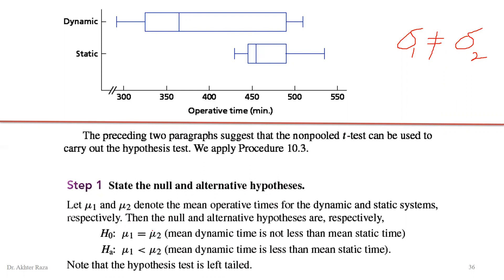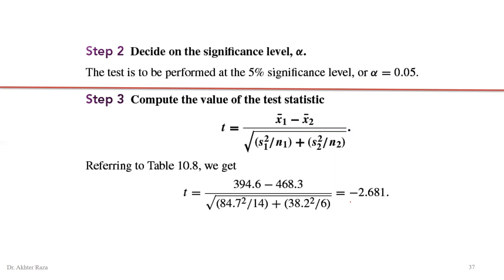The null hypothesis states mean 1 and mean 2 are equal — that the average operative time in the dynamic system is the same as in the static system. The alternate hypothesis, the researcher's claim, is that the average operating time in the dynamic system is smaller than in the static system. This is stated in the alternate hypothesis as a left-tail test. The difference of two population means is zero, so it is not used in the formula.